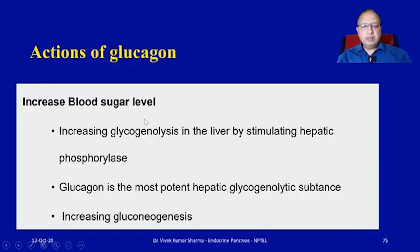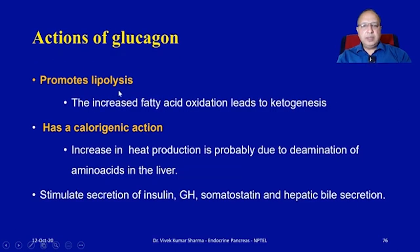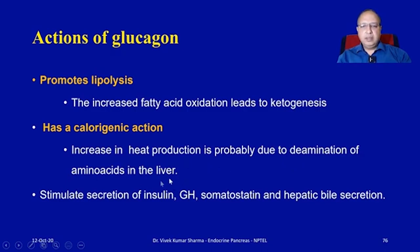Glucagon increases blood glucose level, promotes lipolysis, increases fatty acid oxidation leading to ketogenesis, and has a calorigenic action — it increases metabolic activity and heat generation through deamination of amino acids in the liver. It also stimulates secretion of counter-regulatory hormones including insulin, growth hormone, somatostatin, and hepatic bile secretion.